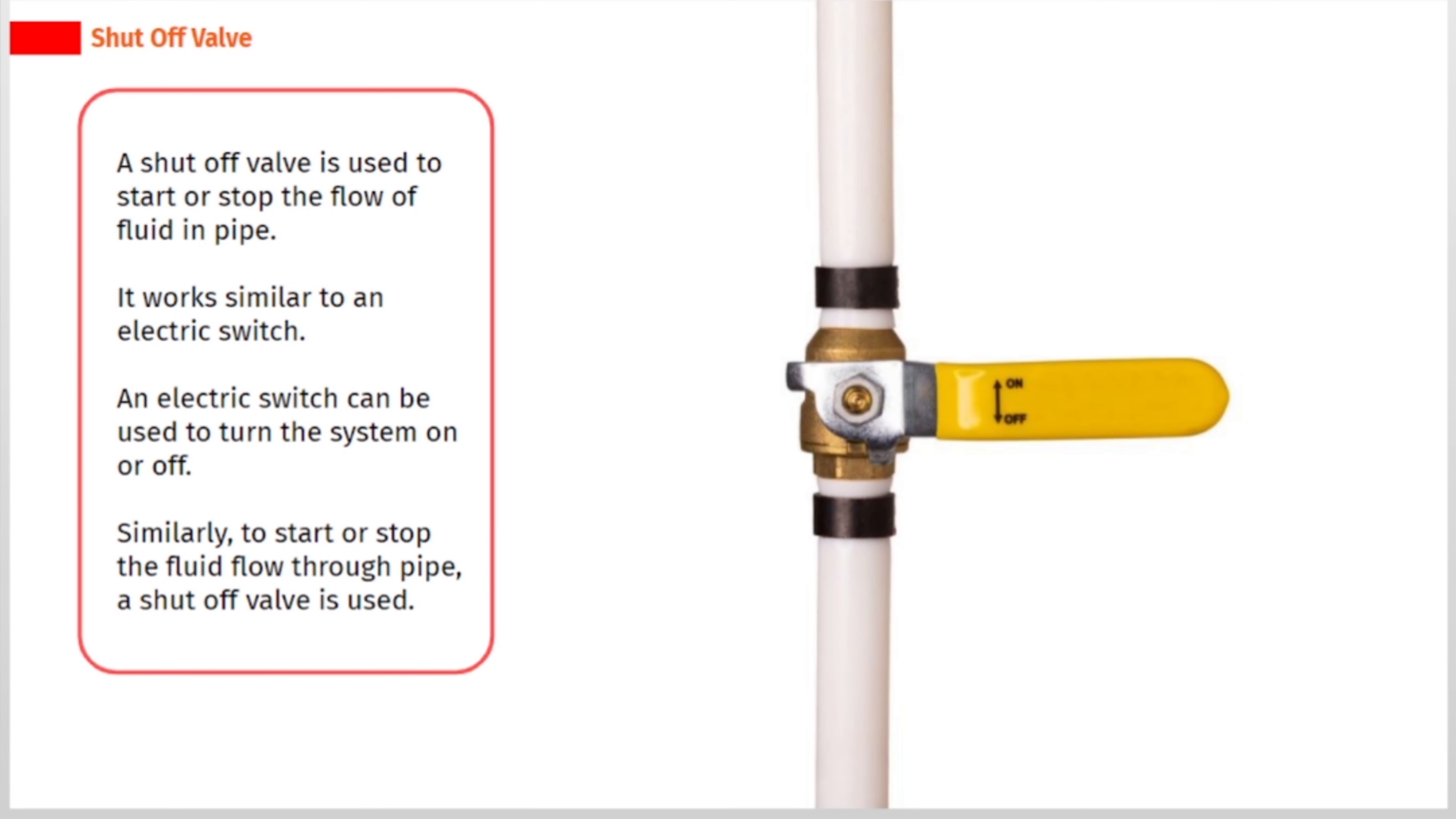A shut-off valve is used to start or stop the flow of fluid in pipe. It works similar to an electric switch. An electric switch can be used to turn the system on or off.